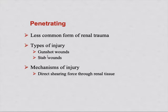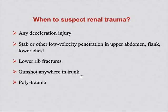Penetrating trauma is less common — it could be a gunshot wound or stab wound, causing complete division through the renal parenchyma. When to suspect renal trauma: we take history in the emergency, checking the scenario — whether it was a road traffic accident, a fall, or a stab wound. Any deceleration injury, stab, or low velocity penetration in the upper abdomen, lower rib fractures, gunshot anywhere in the trunk, or polytrauma are all indicators.